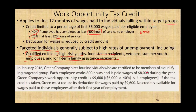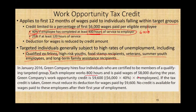In January, Green Company hires four individuals certified as members of a qualified target group. Each employee works 800 hours, qualifying for the 40% rate, and is paid wages of $8,000. Since the maximum eligible wage is $6,000, the credit is $6,000 × 40% × 4 employees = $9,600. Green must reduce its wage deduction by $9,600. No credit is available for wages paid to these employees after the first year.